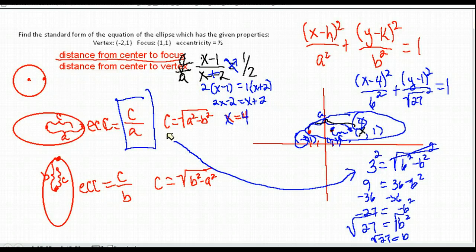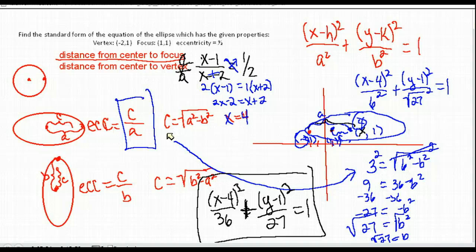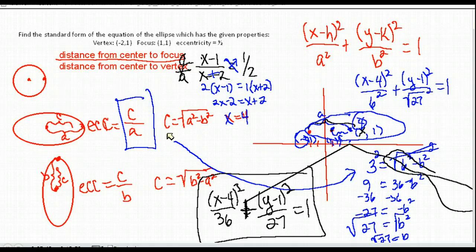Putting that into standard form: (x − 4)² / (√27)² + (y − 1)² / (√27)² ... simplifying those squares, our final answer is (x − 4)² / 36 + (y − 1)² / 27 = 1. That is the standard form for an ellipse with vertex at (−2,1), focus at (1,1), and eccentricity of 1/2.